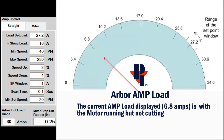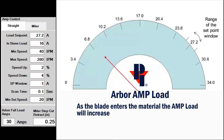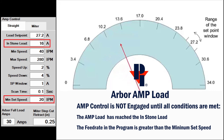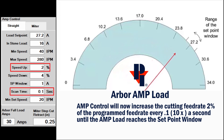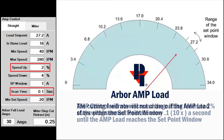Our non-cutting Amp load is 6.8. As the blade enters the material, the load increases. Amp control will engage if the programmed feed rate is more than 20 inches per minute and when the in-stone load reaches 16 Amps. Now, Amp control will increase the feed rate by 2% of the programmed feed rate 10 times a second until it reaches the setpoint window.